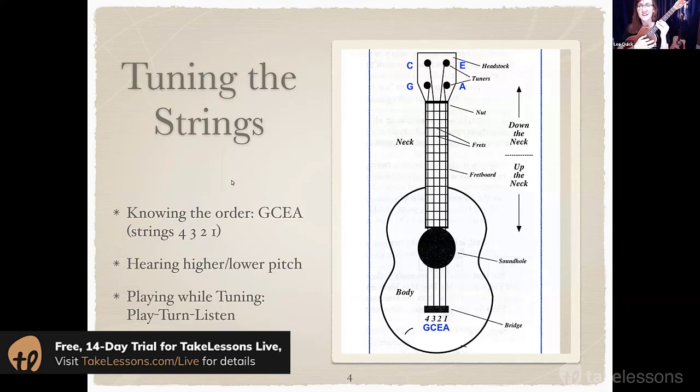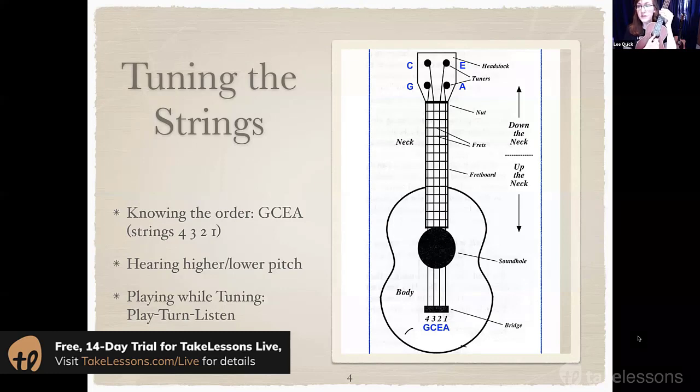I've got a little diagram here to show you the four strings of the ukulele are tuned G, C, E, A. We number the strings in a little bit of a different order than you think we might: four, three, two, one.